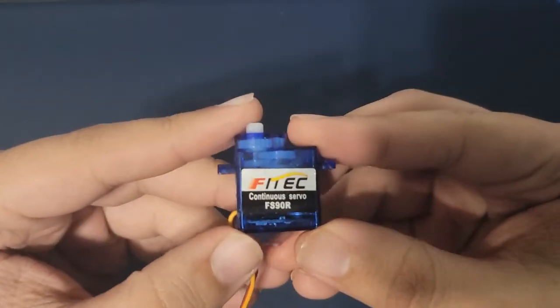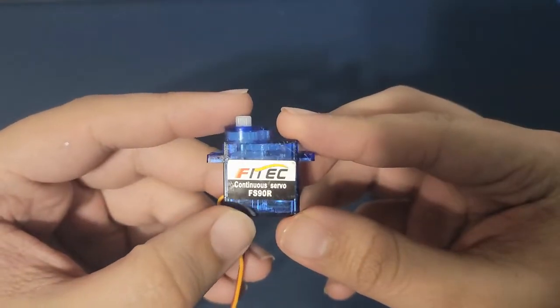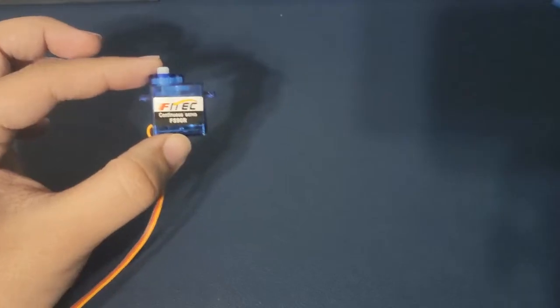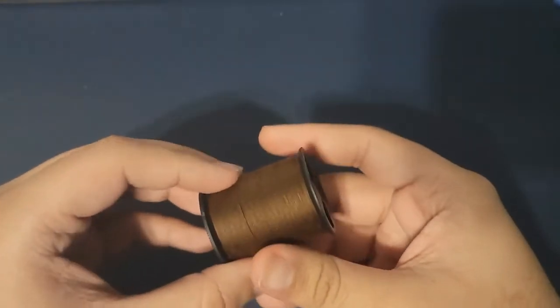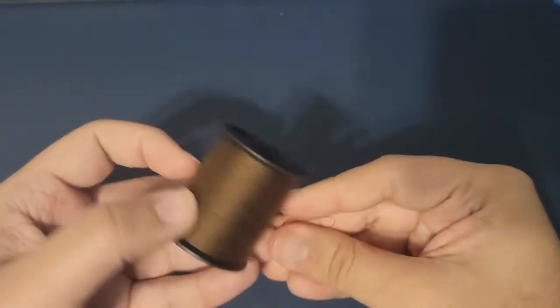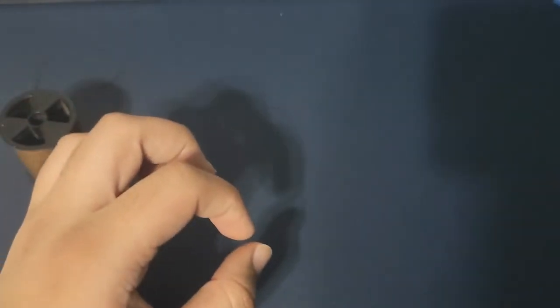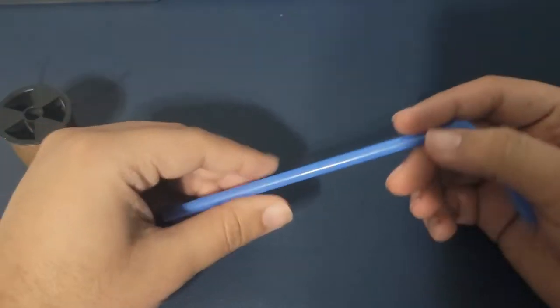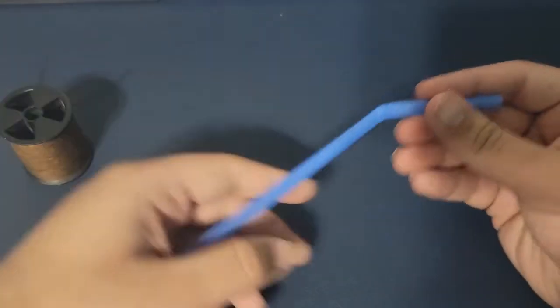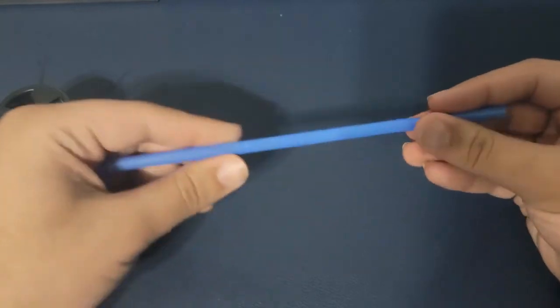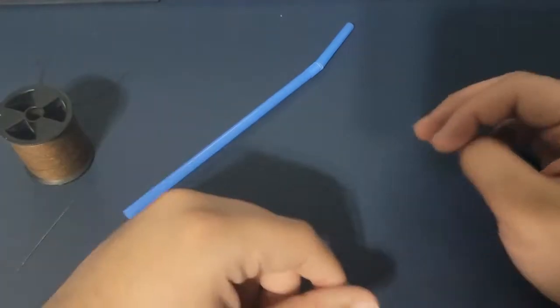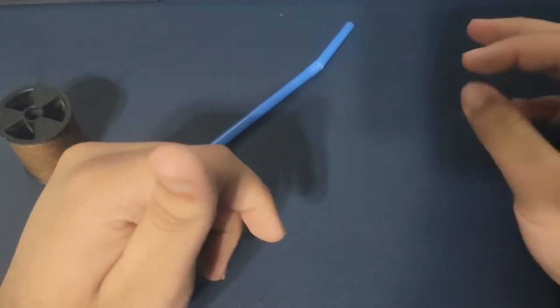You'll need a continuous servo - this is basically a servo that keeps spinning, it doesn't stop at 180 degrees. Then you'll need some thread, doesn't matter what color, a sewing needle, a drinking straw, and then scissors and glue, the basic stuff you need for any project.